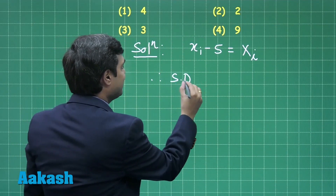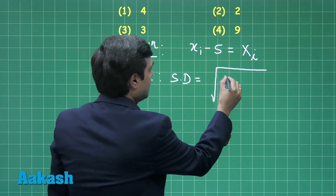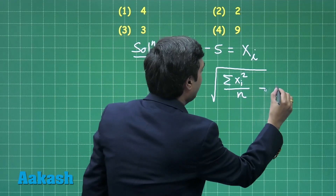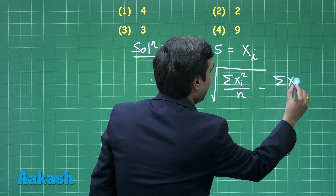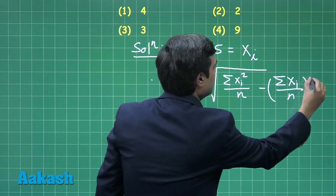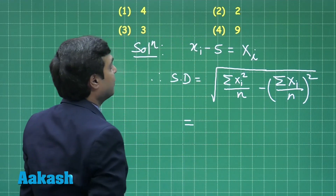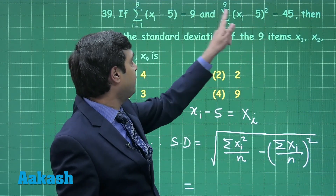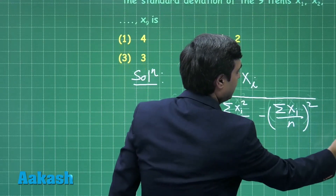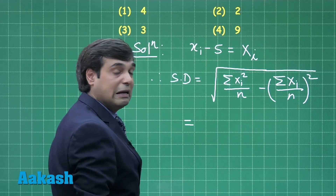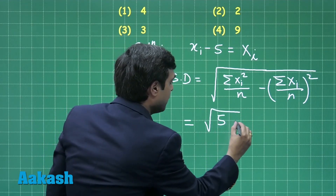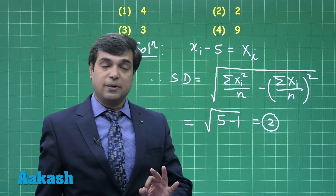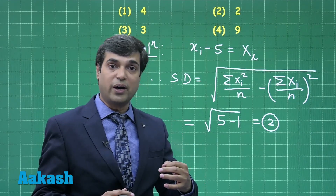Applying the formula for standard deviation of capital Xi: standard deviation equals square root of summation Xi squared by n minus summation Xi by n whole square. From the given data, summation Xi squared is 45 and summation Xi is 9, so we get root of 45 by 9 minus 9 by 9 whole square, which gives root of 5 minus 1, equals 2.